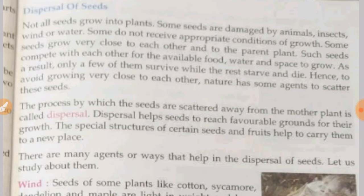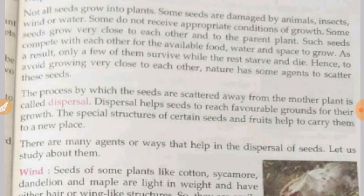Some seeds grow very close to each other. Kuch seeds ek doosaray ke bahut near grow kar jate hain, and also close to the parent plant. Such seeds compete with each other for the available food, water and space to grow. As a result, only a few of them survive while the rest starve and die. Hence, to avoid growing very close to each other, nature has some agents to scatter these seeds.